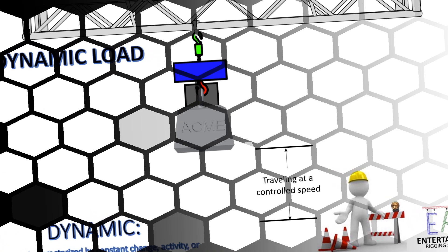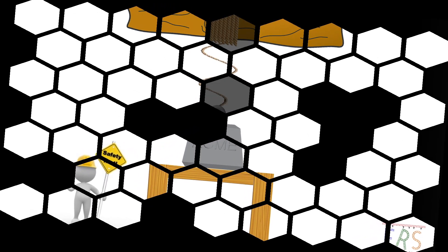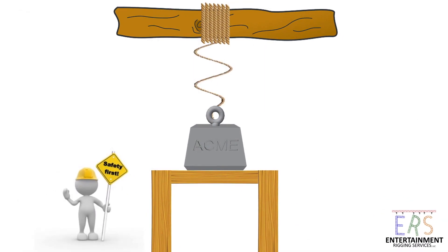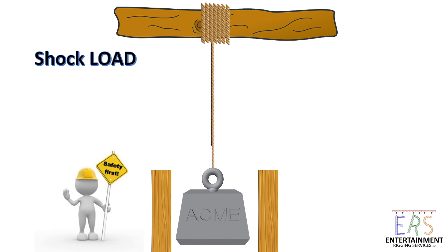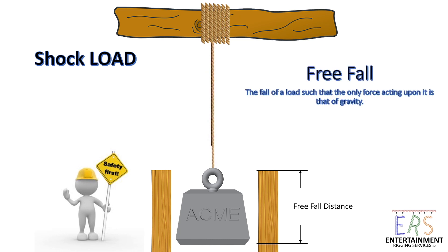Now let's look at a different situation. Say we place our ACME load on a platform with a trap door and tie it to a tree branch with a length of rope. If we release the trap door, our ACME load drops until the rope stops it — this is known as a shock load. Why? Because it has specific characteristics of its movement: free-fall distance. Free-fall is defined as the fall of a load such that the only force acting upon it is that of gravity. So for a dynamic load to be classified as a shock load, only gravity can be pulling on the load.